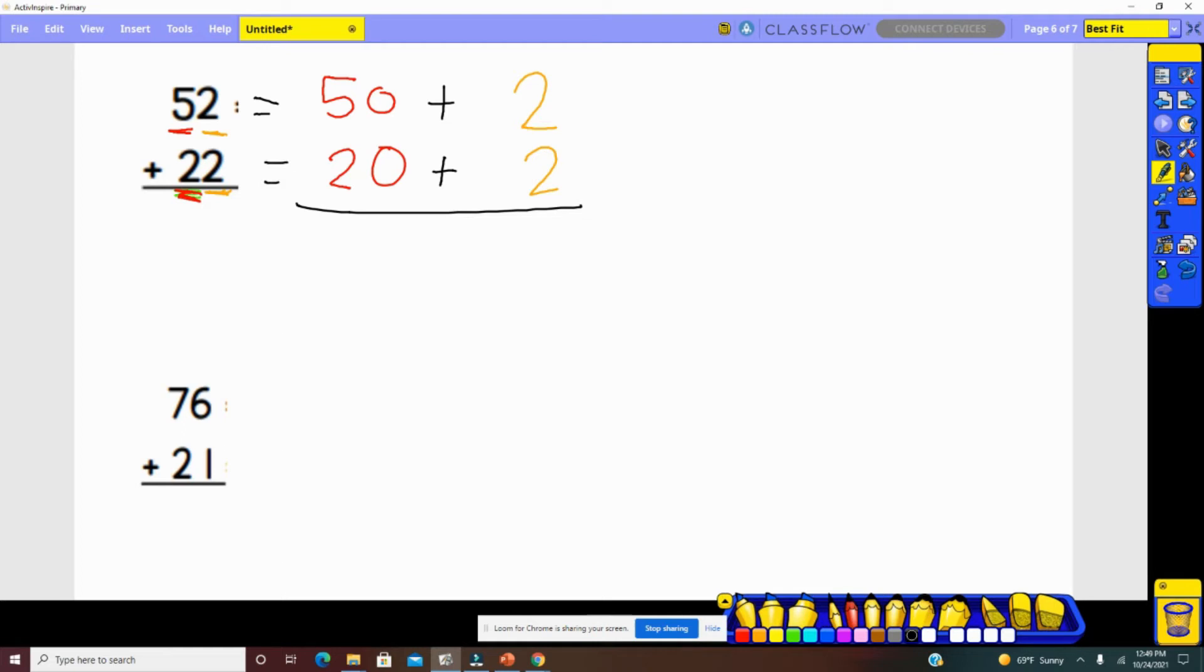Now we will add the values in the ones place and the values in the tens place. 2 plus 2 equals 4. 50 plus 20, 50, 60, 70 has a value of 70. Our answer will be 70 plus 4, which is 74.